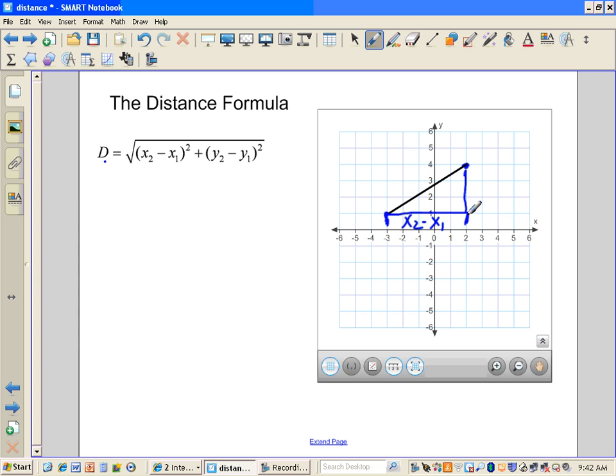And then this length along here, from here to here, well, I'm just going from my Y value of 4 to my Y value of 1. So that's the Y2 minus Y1 part.